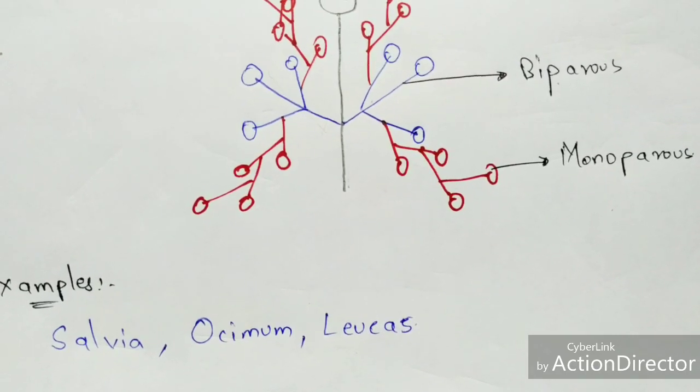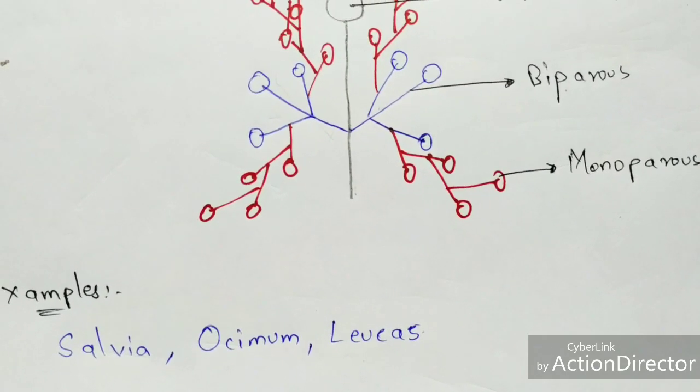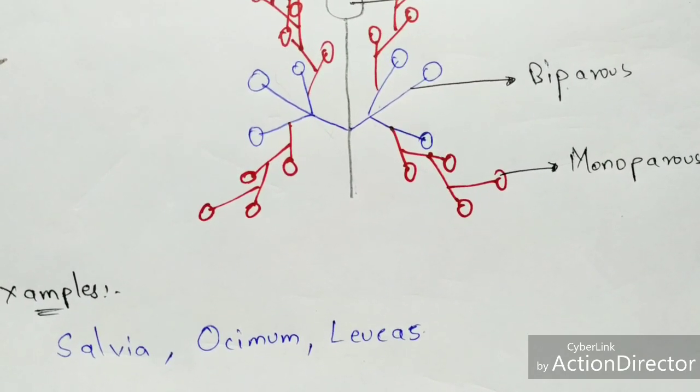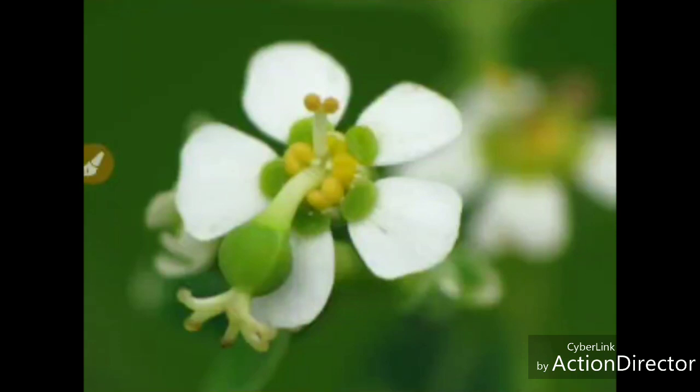Examples of verticillaster are Salvia, Ocimum, and Leucas. Now let us see the original diagrams of these types of inflorescence. In the cyatheum inflorescence photograph, the nectar gland is present represented as a yellow-colored substance. These nectar glands help in the secretion of sugar-rich liquids which mainly help in the growth of the flower.